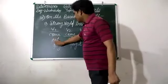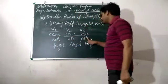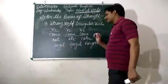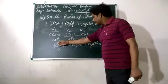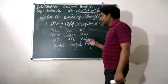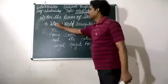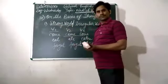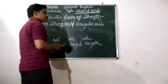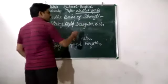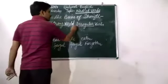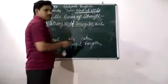Eat, Ate, Eaten. Forget, Forgot, Forgotten. If the verbs have different forms, they are called strong verbs. They are also called irregular verbs.